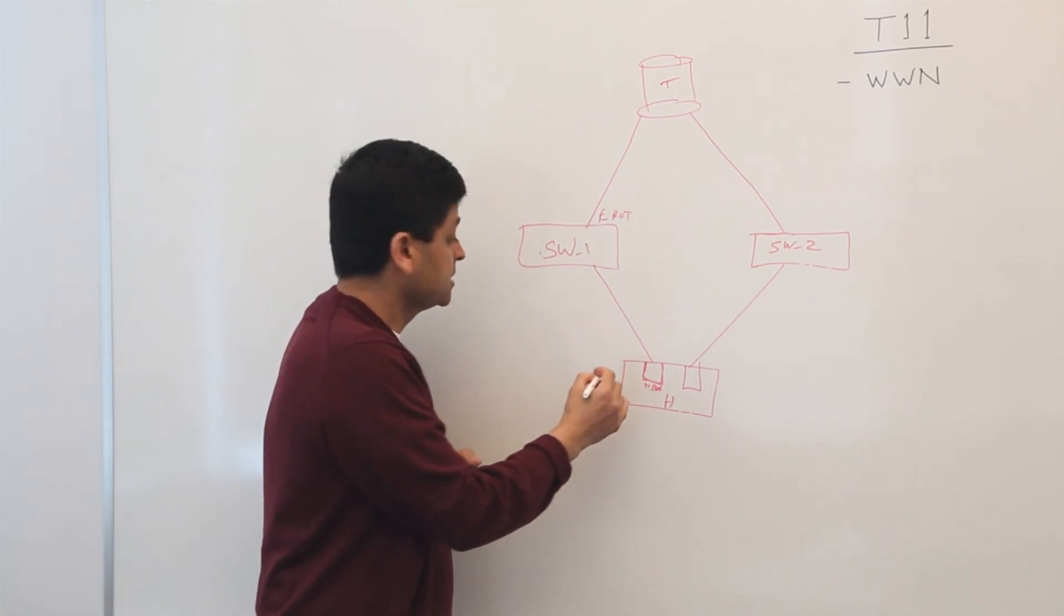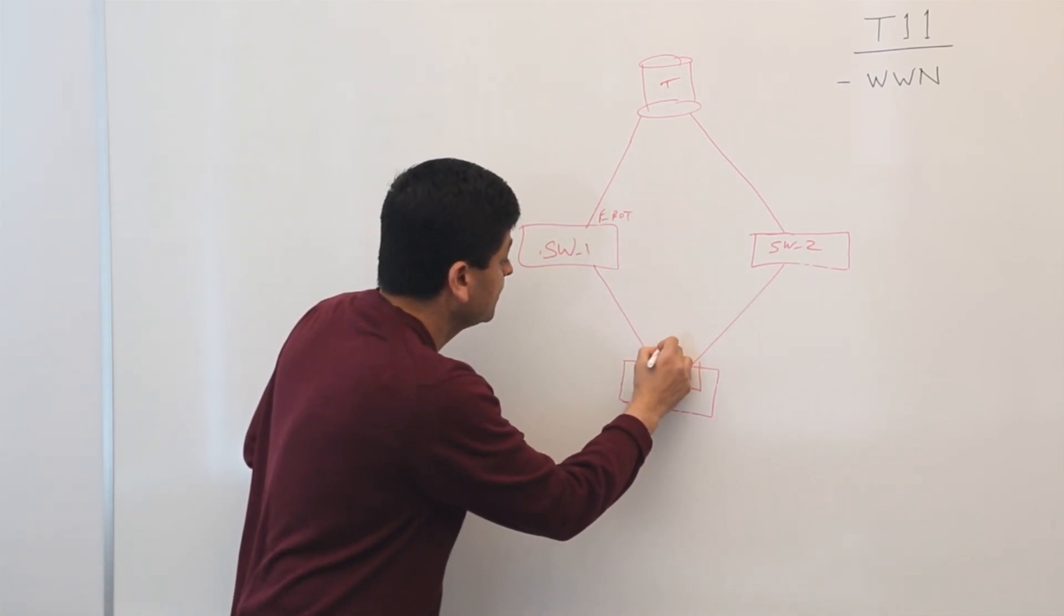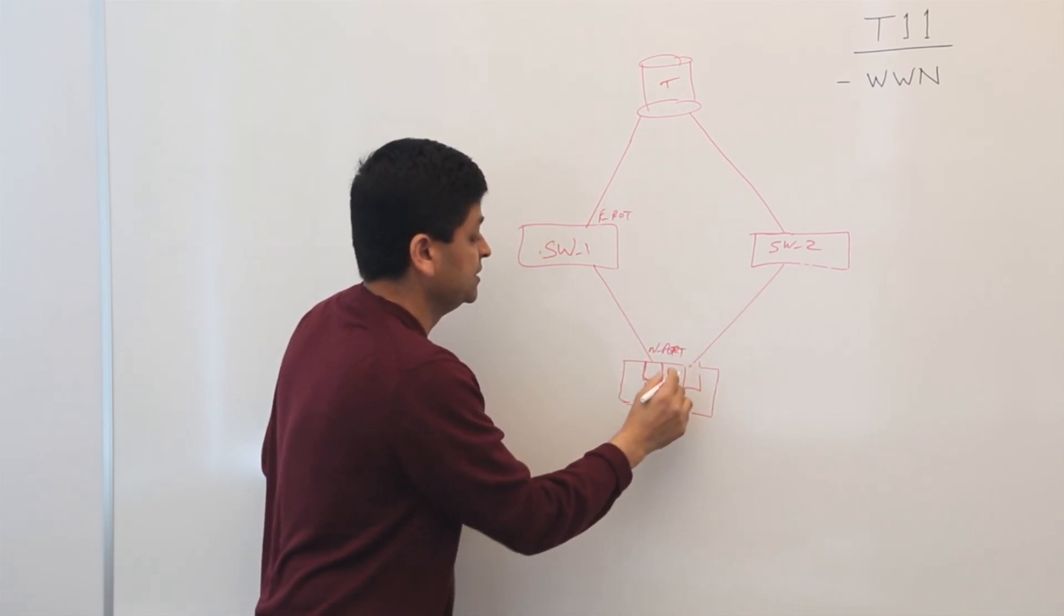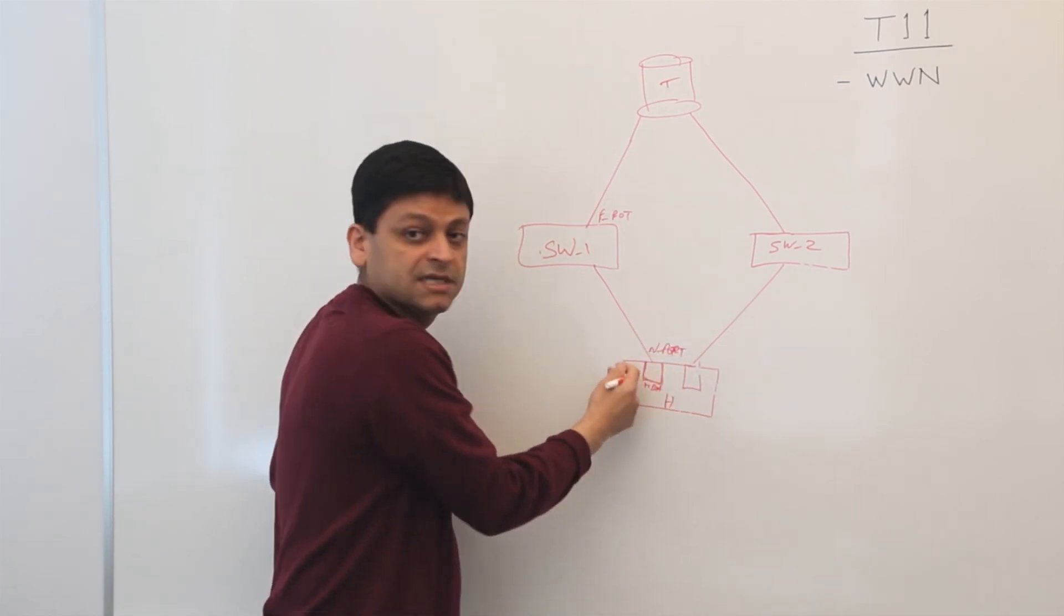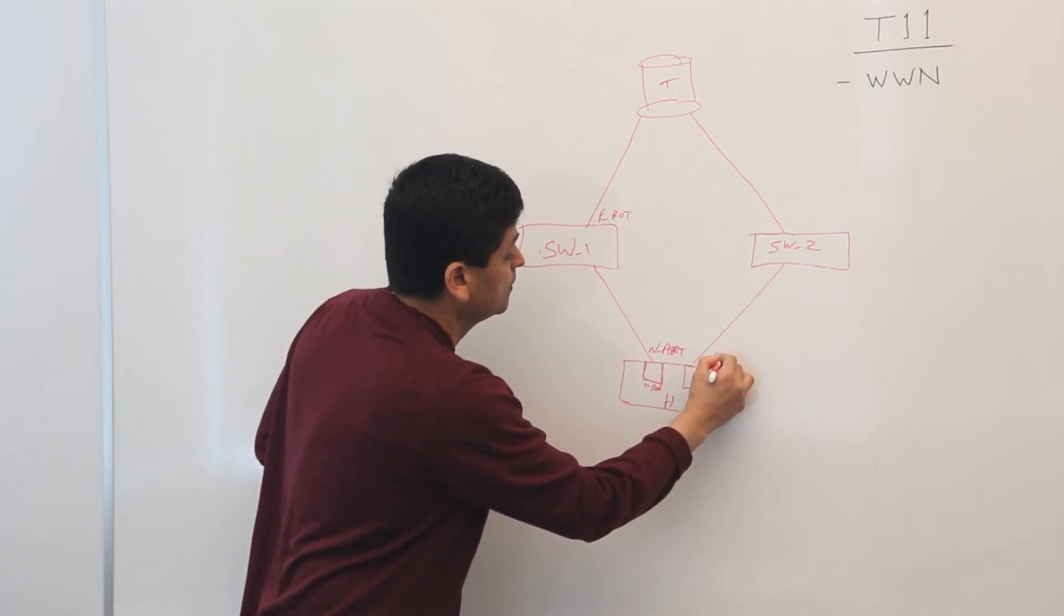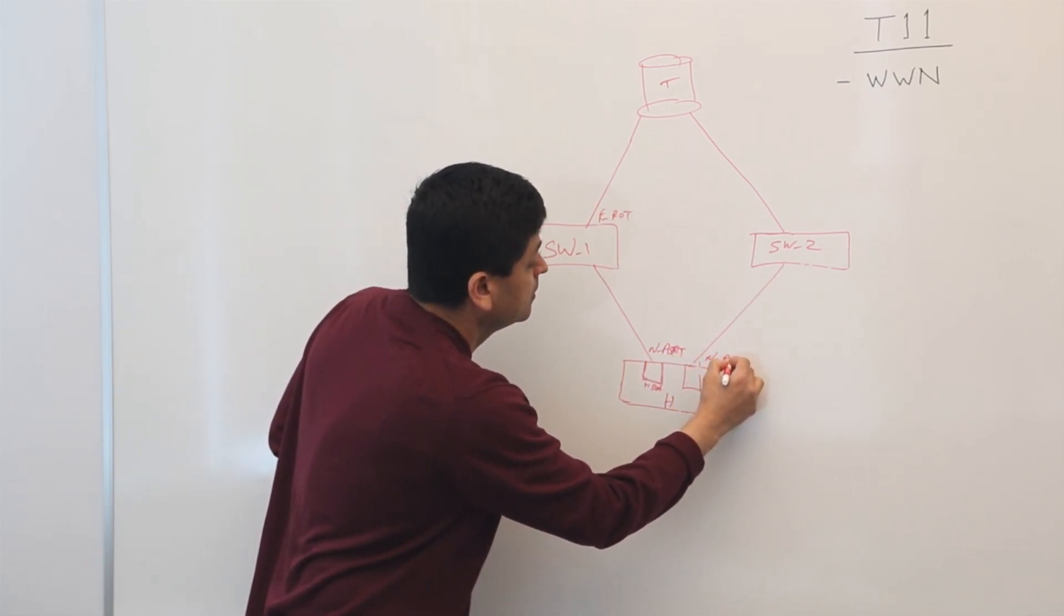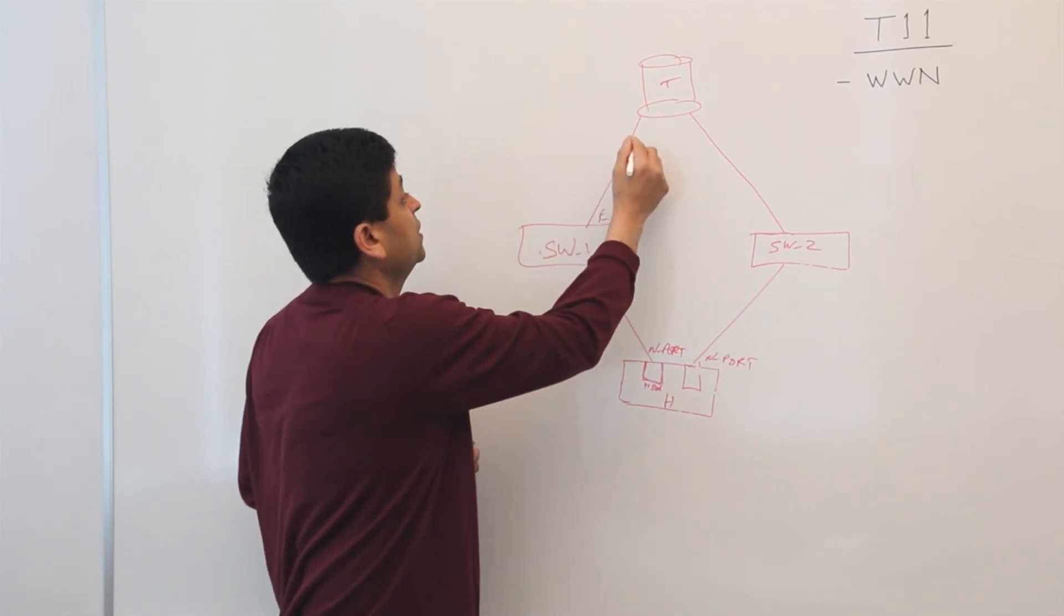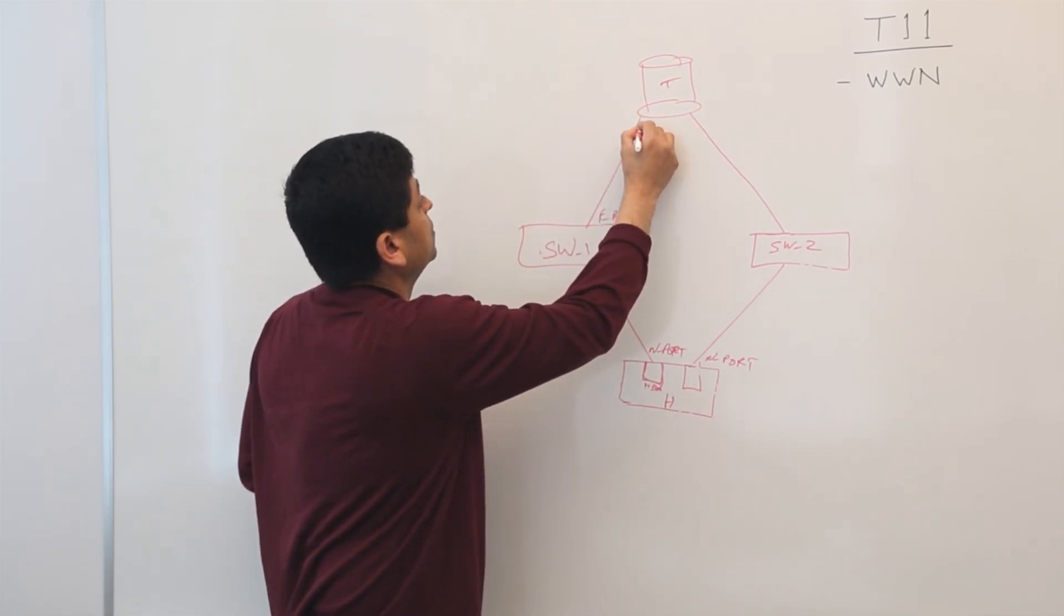N port is a port which are on the devices. N port which are on the devices here. So as you can see here, we have two N ports. Same thing on the target or on the storage side of things which are calling ports.